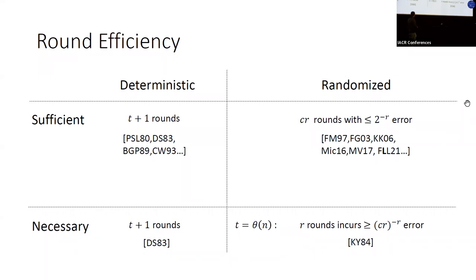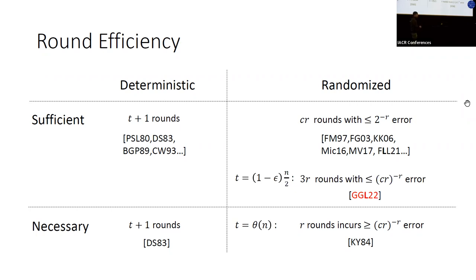This was not known even for any linear number of corruptions or even for static corruption. This is what we do in this work: we present a protocol that essentially closes this gap for any fraction of corruptions up to n over two, and we also support adaptive corruptions. Note the threshold is up to one minus epsilon, so there is still a small gap, and the constant depends on epsilon — roughly one over epsilon.